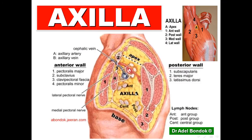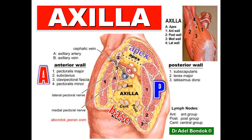Again, this is the axilla with the axillary fat. The anterior wall is formed by the pectoralis major anteriorly, pectoralis minor and subclavius behind, and the clavipectoral fascia. The posterior wall: subscapularis, teres major, latissimus dorsi. The medial wall is formed of serratus anterior, ribs, and intercostal muscles. The lateral wall is formed of the bicipital groove, long head of biceps, short head of biceps, and coracobrachialis.